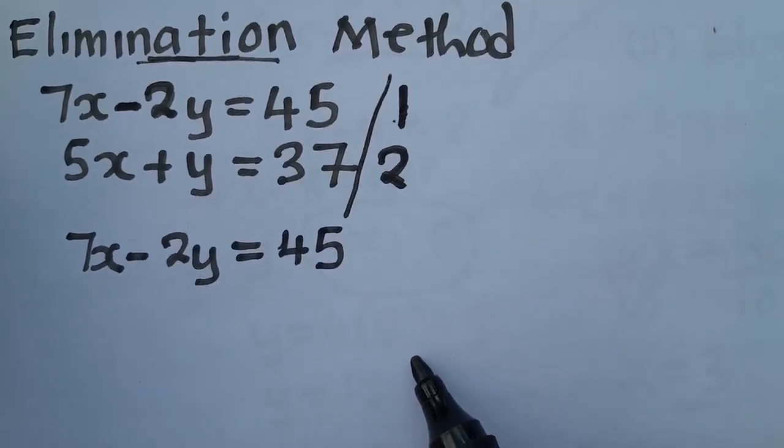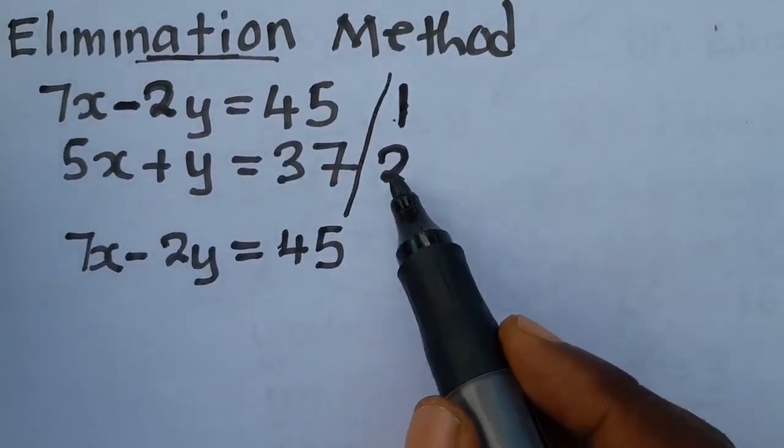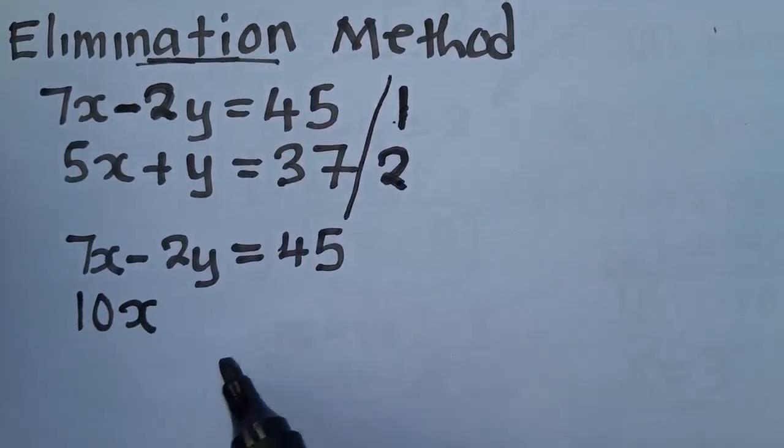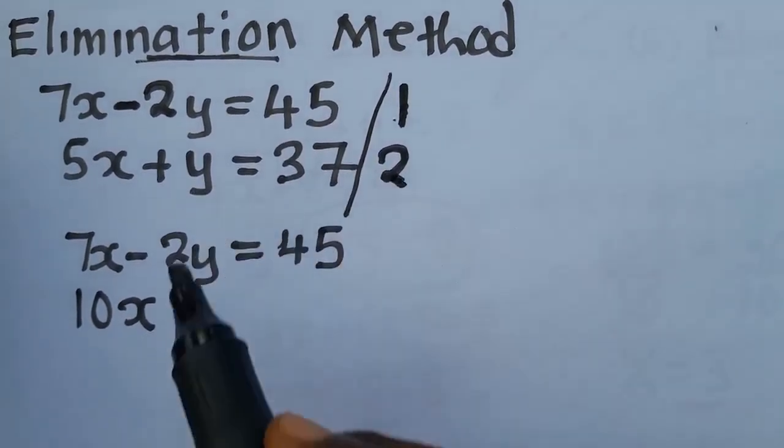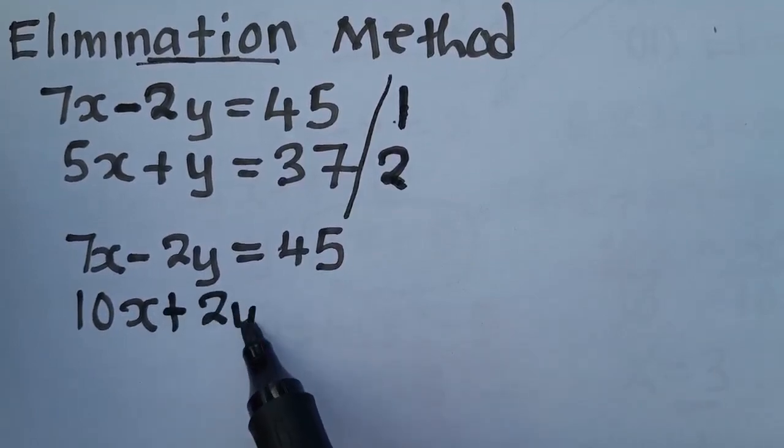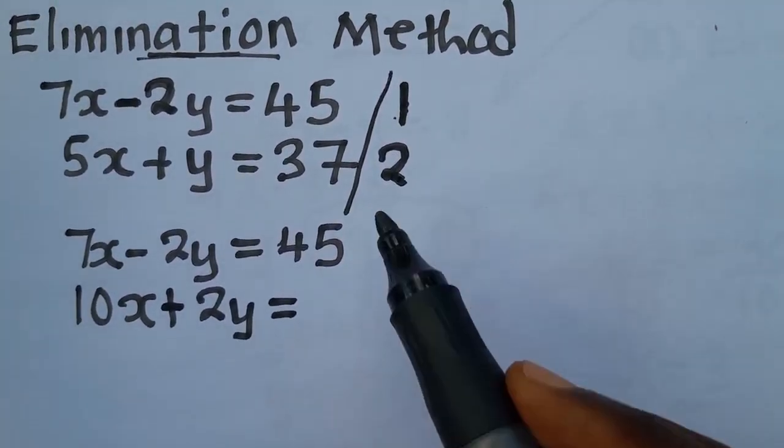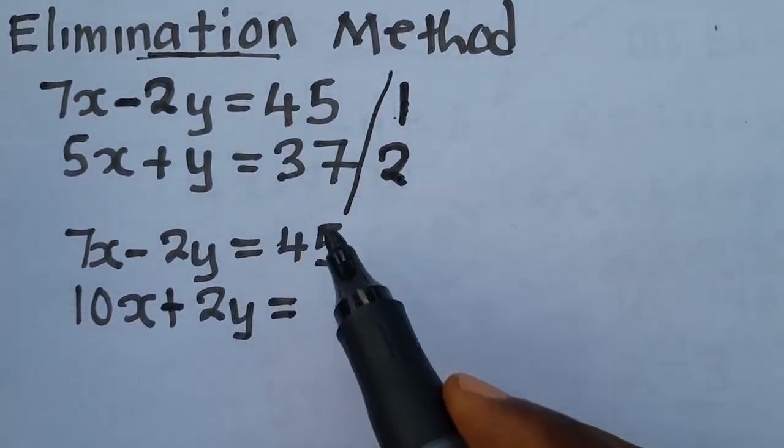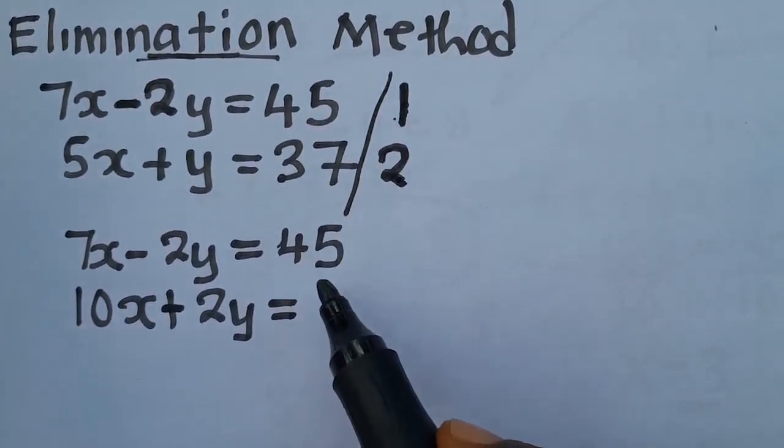After reaching there, then what is 2 times 5? That is 10x. 2 times y plus 2y, which is equal to, what is 2 times 37? You are going to get 74.